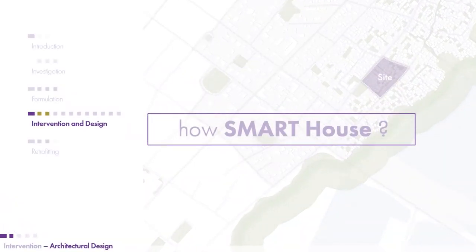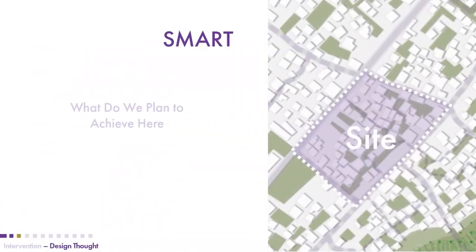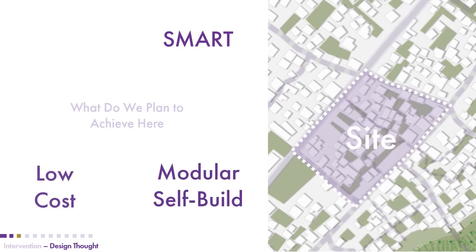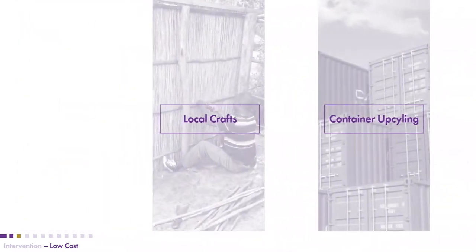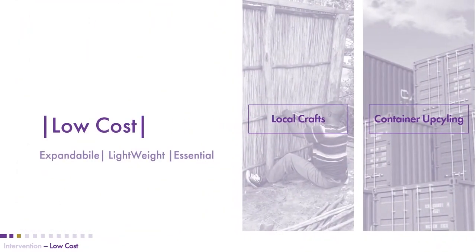Zooming into the sites, we designed our smart house. To achieve this, we wanted it to be smart, but also modular, self-built, and low-cost, improving the quality of life of the people. This would be achieved using local crafts and modular self-building techniques. The container system that exists in the city was used, with the aim of improving the comfort of residents. In terms of low cost, the main considerations were expandability, lightweightness, and provision of essential items in the house.